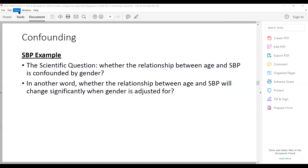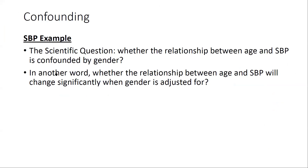I will show how to examine confounding through the SBP example. The scientific question here is whether the relationship between age and SBP is confounded by gender. This is different from when we assess if gender is an interaction term or an effect modifier. What we really want to know is whether the relationship between age and SBP will change significantly when gender is adjusted for — that is, with and without adjustment for gender, does the relationship have a big change?